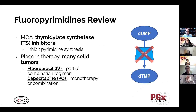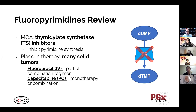Fluoropyrimidines are really the backbone of a lot of standard chemotherapies. They're used for many different solid tumors, especially breast, GI, and head and neck cancers. They're thymidylate synthetase inhibitors, so what they do is they inhibit the conversion of D-UMP to D-TMP, which is a really crucial step in the production of pyrimidines. Basically, in the long run, they inhibit DNA synthesis, which in turn inhibits the proliferation and division of rapidly dividing cells, obviously cancer cells.